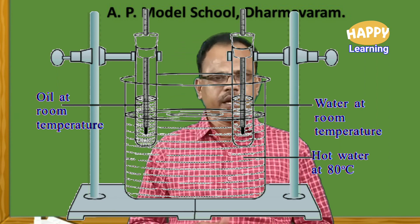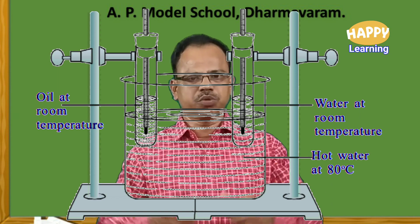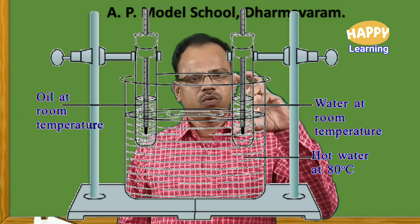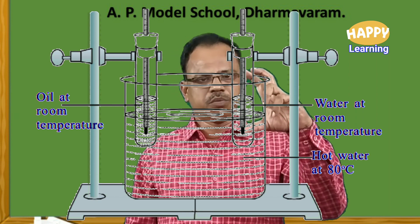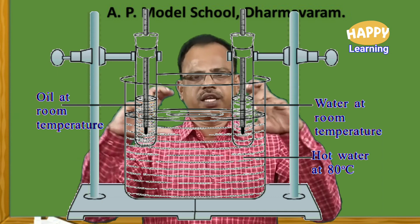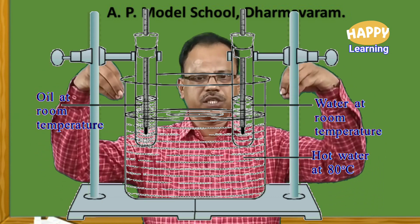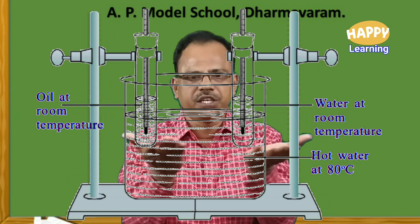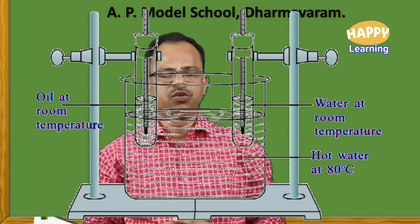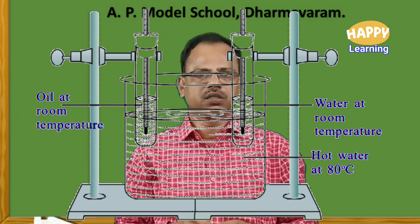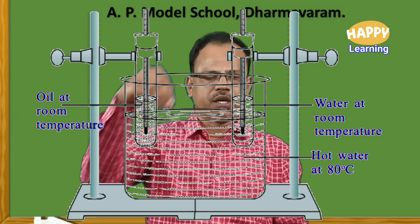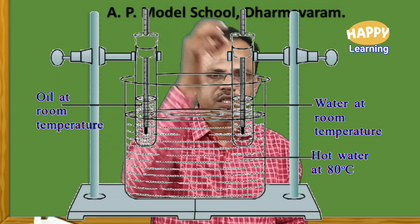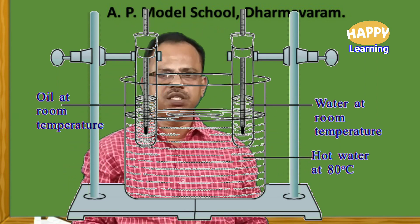Then take two test tubes — boiling test tubes, sufficiently large in size. Take water in one of the test tubes and take oil in another test tube. Using the retort stand, arrange these two test tubes such that half of each test tube is submerged into the hot water. Then put whole rubber caps and arrange thermometers in both of these test tubes.